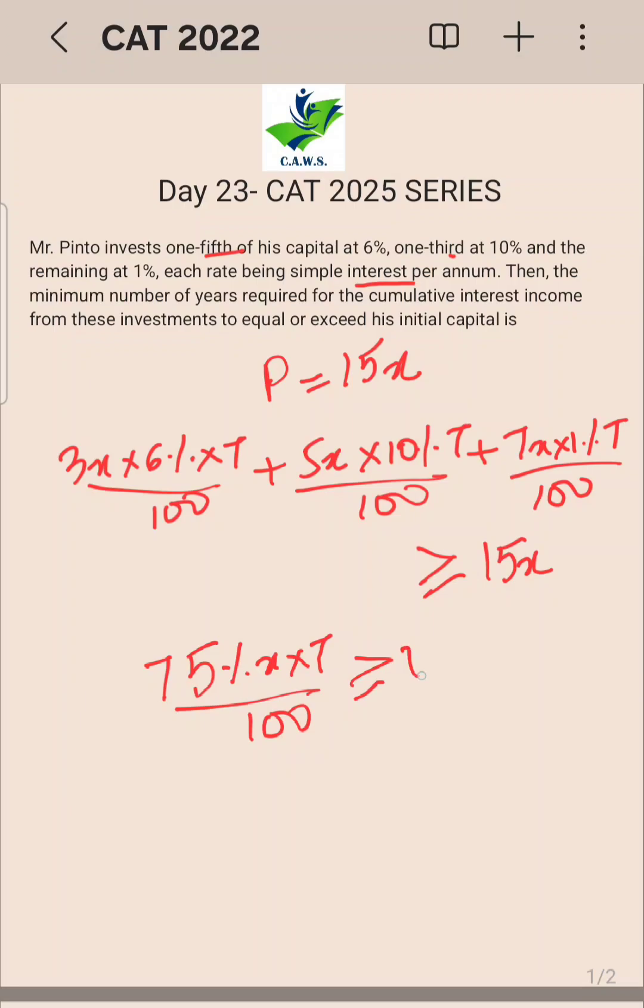X cancels, so can I say T should be greater than or equal to 1500/75? Correct. 75 doubled is 150, so that means your time period should be greater than or equal to 20 years. That is your answer.